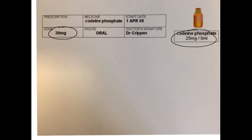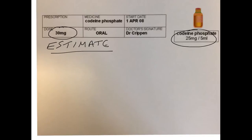Firstly, we could estimate roughly how much syrup we are going to use. We are looking for 30mg from the prescription, and a 5ml spoon would give you 25mg. So we are looking for a bit more than a 5ml spoon. Let's estimate 6ml.